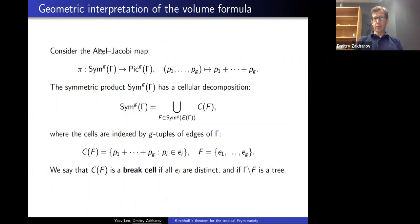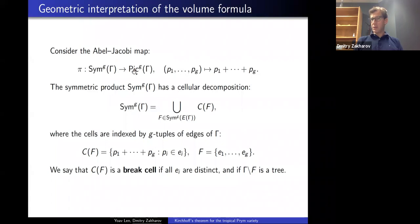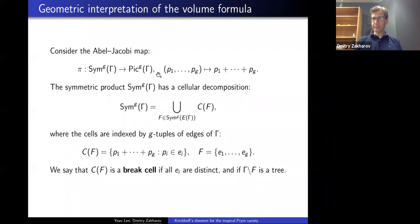Here's how this works. We consider the tropical Abel–Jacobi map, mapping from the G-th symmetric power of a curve to Pic^G. It's exactly the analog of the algebraic one: you take G points and look at the line bundle they generate, which you identify with the corresponding divisor. In the algebraic setting, this map has degree one; it's onto, and the locus of indeterminacy of the inverse map is precisely the theta divisor — the set of line bundles with a nontrivial section.